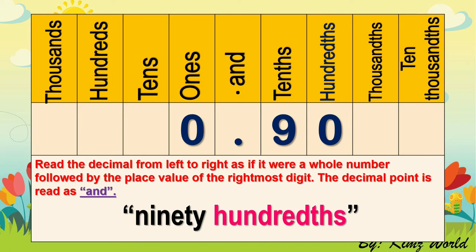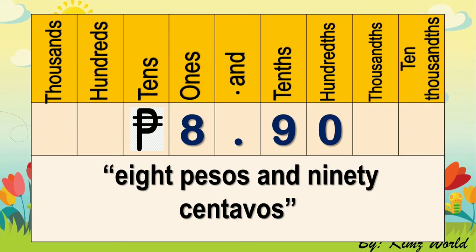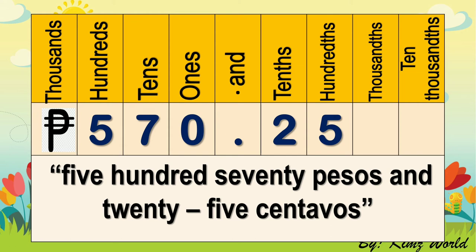What if we are reading money or an amount? For example, we have this amount. This is how we read it: 8 pesos and 90 centavos. As you can see, we no longer add the place value of the rightmost digit. Instead, we add the word 'centavos,' and in the whole number part, we say 'pesos.' Another example: 570 pesos, the point as 'and,' then 25, and then add the word centavos. So this amount is read as 570 pesos and 25 centavos.